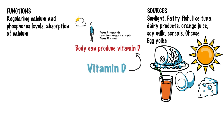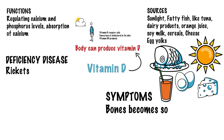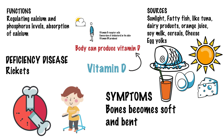The disease caused by deficiency of Vitamin D is known as rickets. When one is suffering from rickets, the bones become soft and bent and are rendered very vulnerable. So make sure that you get enough sunlight.